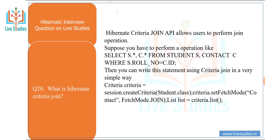Last question: what is Hibernate Criteria join? The Hibernate Criteria join API allows you to perform join operations. For example, to perform: SELECT s.*, c.* FROM Student s, Course c WHERE s.rollNumber = c.id — you can write this using Criteria join as: Criteria join equals c.createCriteria(Student.class), then criteria.setFetchMode with JOIN, and list equals criteria.list().